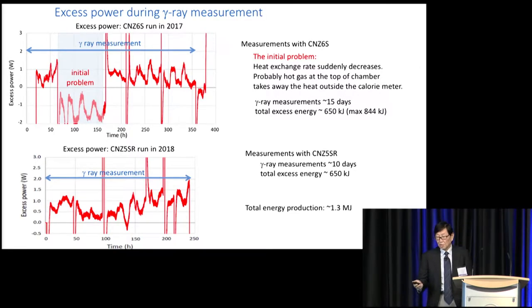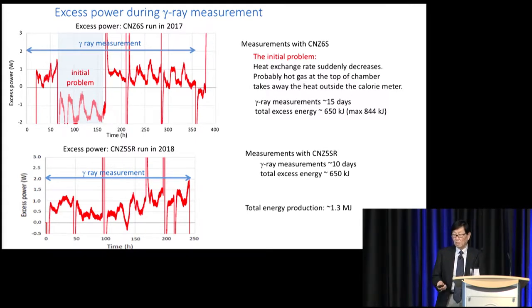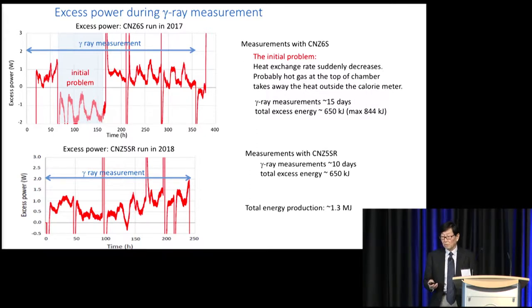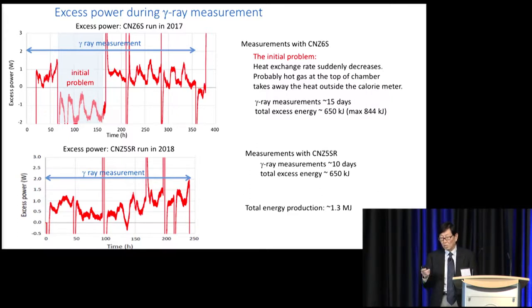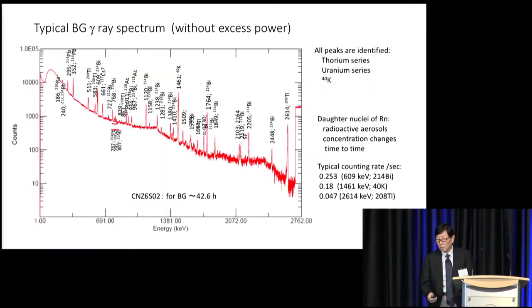This is the excess power during the gamma ray measurement. For the upper figure, the run is from last year, and the lower one is this year. Excluding the initial problem period — the shaded area — we have a total energy production of 1.3 megajoules in this period.